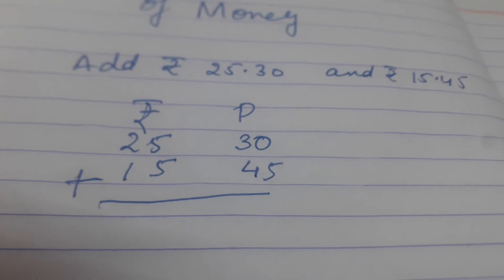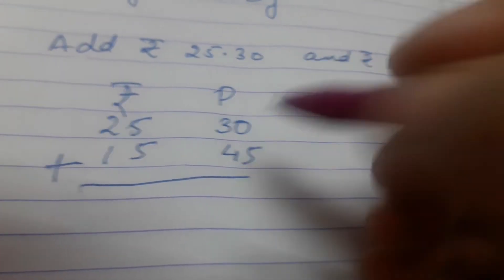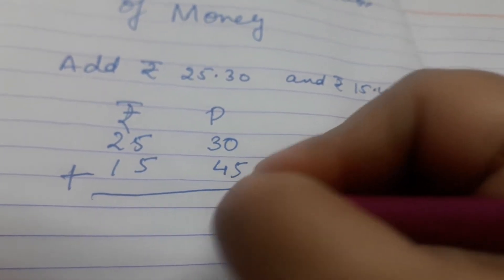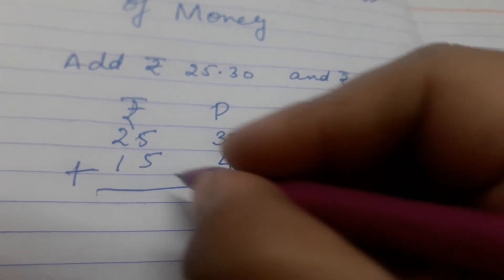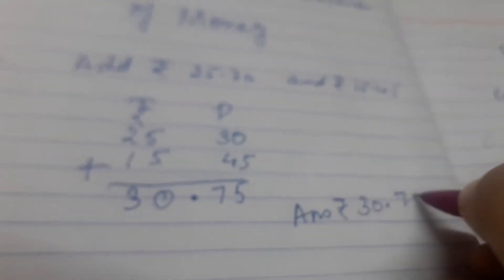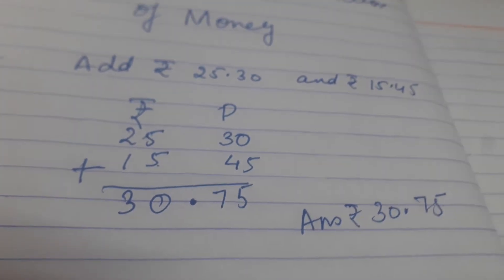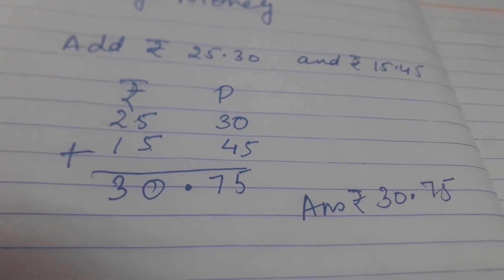You will start from one side. 0 plus 5 is 5. 4 plus 3 is 7. 5 plus 5 is 0. 2 plus 1 is 3. Then Rs. and paise will be separated by using a point. So your answer will be Rs. 30.75.